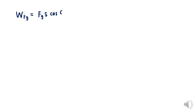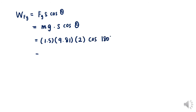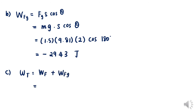For question B, we want to find the work done by the gravitational force on the object. Gravitational force equals weight, so W = mgs cosθ. The angle between gravitational force and displacement is 180°, giving negative 29.43 Joules. The negative sign means that the work is done by the system. The total work is the sum of work by the applied force and work by gravity, giving 0 Joules.